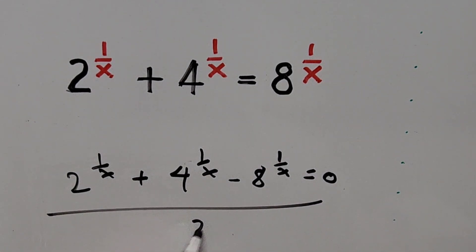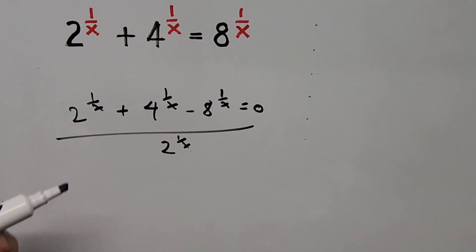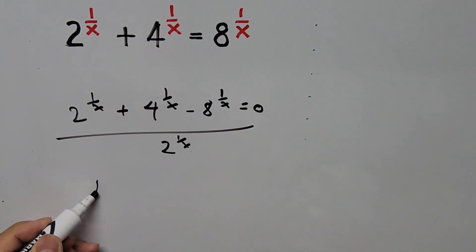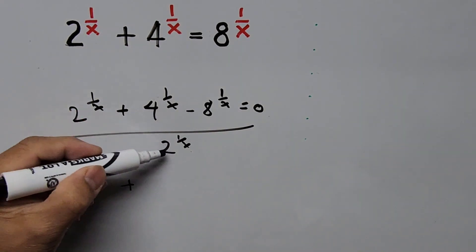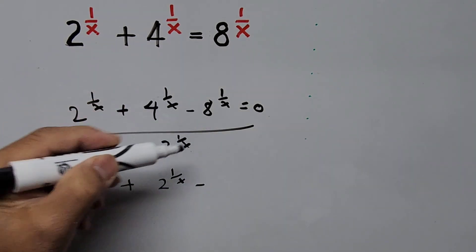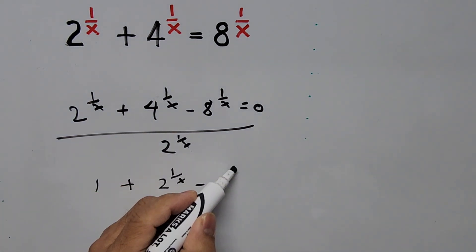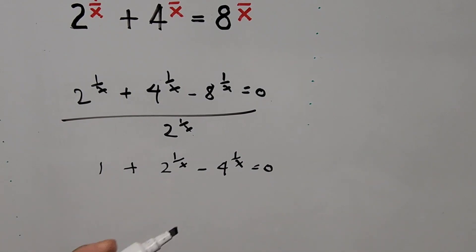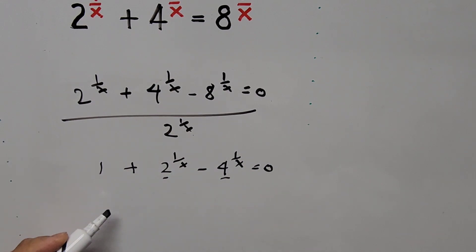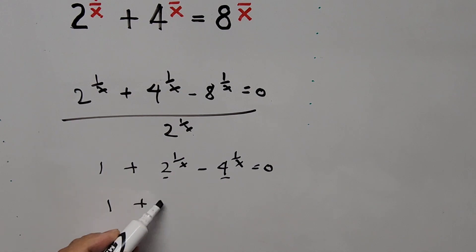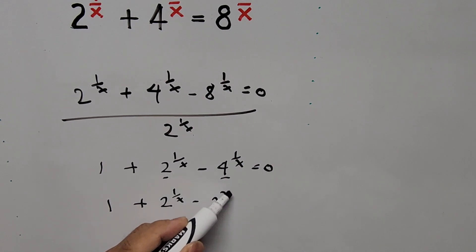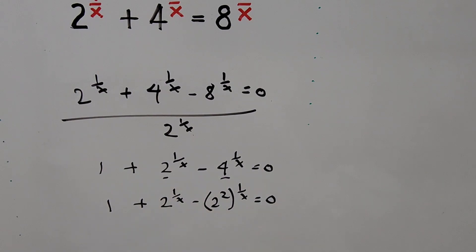Now dividing the whole equation by 2 to the power of 1 over x: the first term, 2^(1/x) divided by 2^(1/x), is 1. Then plus: 4 divided by 2 is 2, with the same exponent 1 over x. Minus: 8 divided by 2 is 4, raised to the power of 1 over x, equals 0. From here, notice that 4 is a multiple of 2, so the equation becomes 1 plus 2^(1/x) minus 4, which can be written as 2 squared, to the power of 1 over x, equals 0.